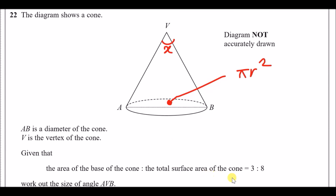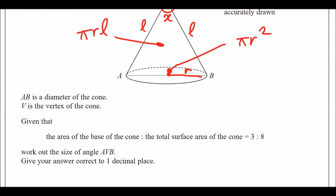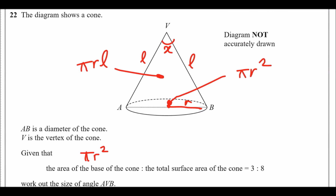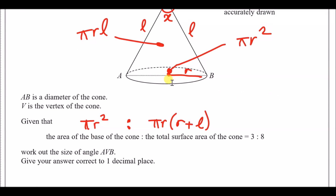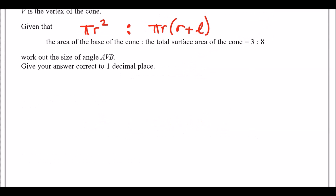The area of the base is pi r squared. The total surface area has two parts: the base area pi r squared, plus the curved surface area pi r l, where l is the slant height. Factorising, the total surface area is pi r times (r plus l). So the ratio of base to total is pi r squared to pi r(r plus l).